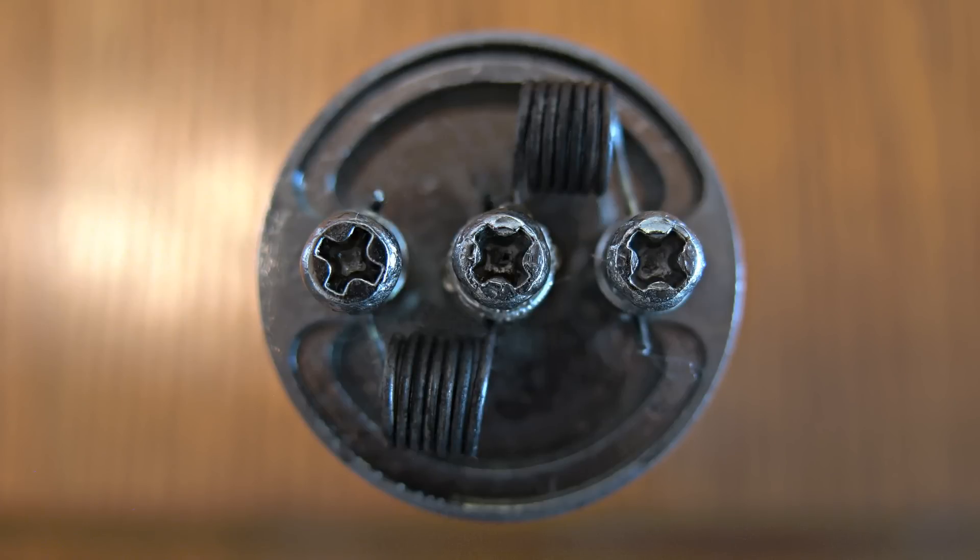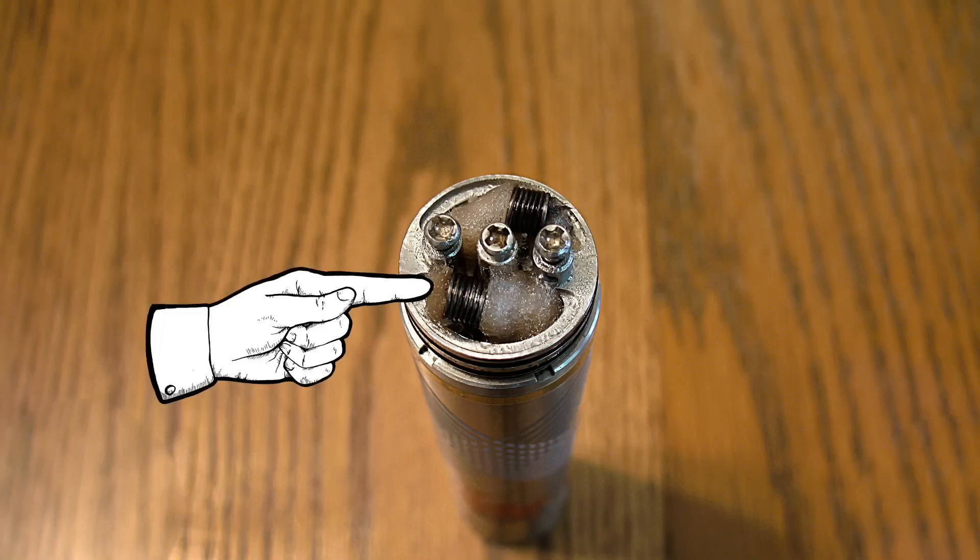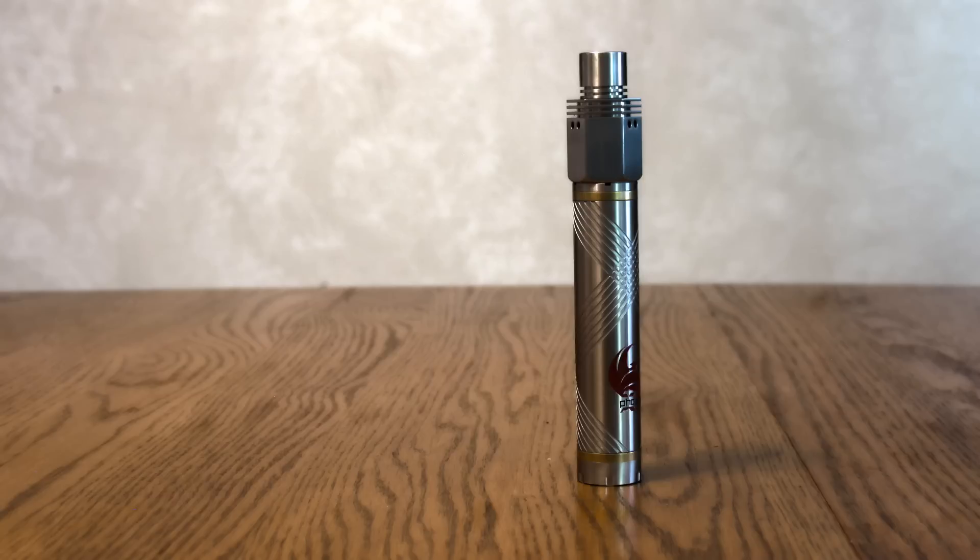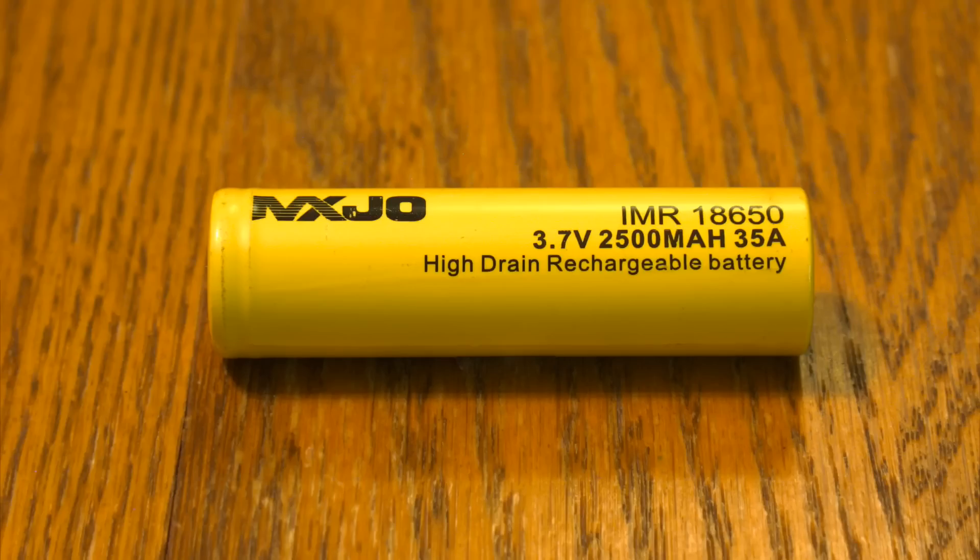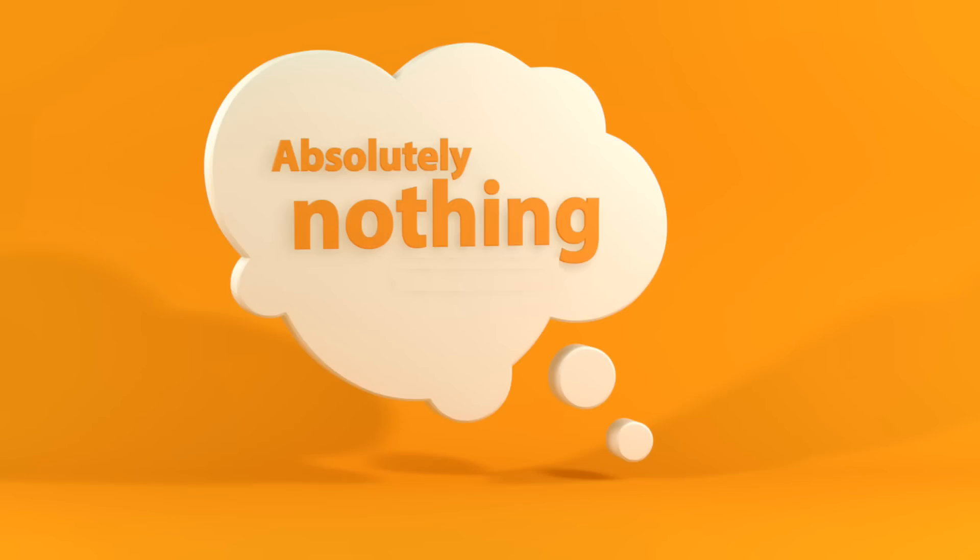In a short time, the guy cranked out two 0.3-ohm coils. In went the cotton, which I then saturated with my favorite homemade 555, put it on my Spear Mechanical Mod, using the appropriate battery, of course, and fired it up.